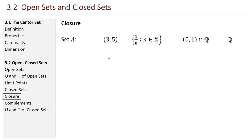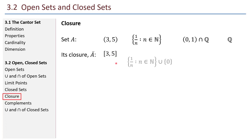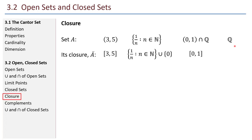Let's talk about the closure of a set. I start with some basic sets and look at their closures. The closure of a set is the smallest closed set that contains the given set, or we can think of it as the set plus its limit points. The closure of the open interval from 3 to 5 is the closed interval from 3 to 5. The closure of {1/n} is that set including 0, which was the limit point. What is the closure of all rationals between 0 and 1? In fact, it's every real between 0 and 1, including 0 and 1. And the closure of all rational numbers? The limit points of the rationals are all reals.